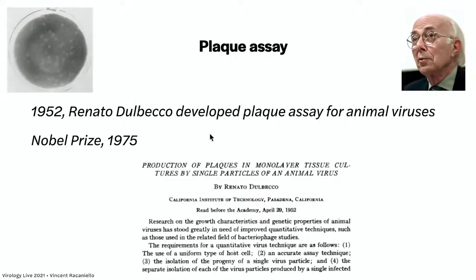In 1952, an Italian scientist working in California at Caltech, Renato Dulbecco, adapted that plaque assay for use with animal viruses. Here is one of the plaque assay plates from his paper, published in 1952: 'Production of plaques in monolayer tissue cultures by single particles of an animal virus.' This was the plaque assay procedure that we all now use to study animal viruses.